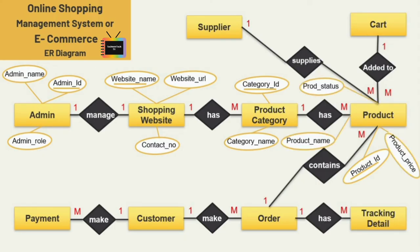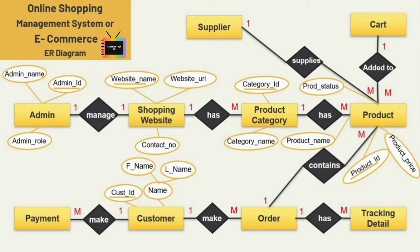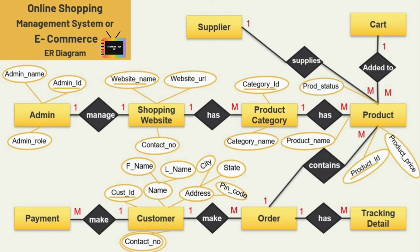Next we have the customer entity. The first attribute is customer ID, which is the key attribute. Next is the name attribute — here I am using a composite attribute, so we have broken down the name attribute into two sub-attributes: first name and last name. We have also used a multi-valued attribute for contact number, because one user can have various contact numbers.